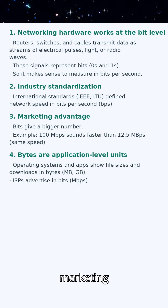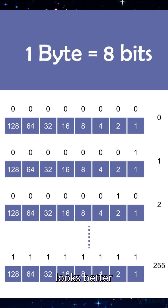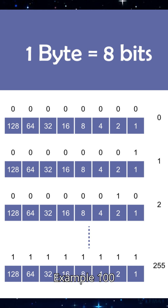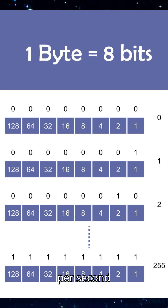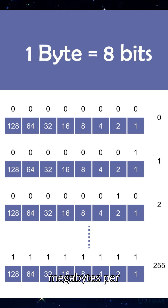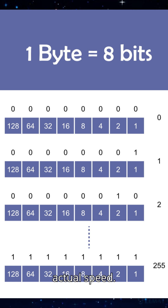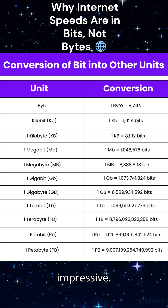Reason 3: Marketing advantage. A bigger number looks better in ads. For example, 100 Mbps sounds faster than 12.5 MBps — but both are the same actual speed. Mbps simply sounds more impressive.